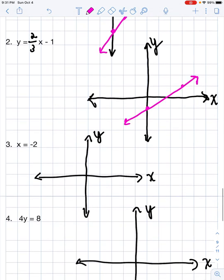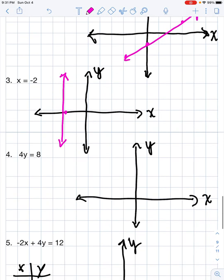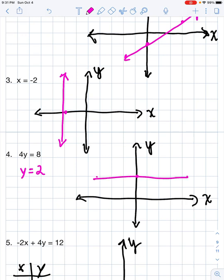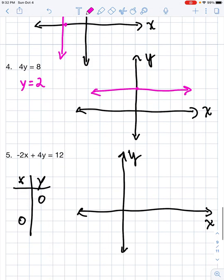The next one, special case of a line where x equals negative 2, so I would go over to negative 2 on the x-axis and draw my line. In case 4, I could divide both sides of this equation by 4. This is the special case of a horizontal line, so I could go up to positive 2 on the y-axis and draw my line.